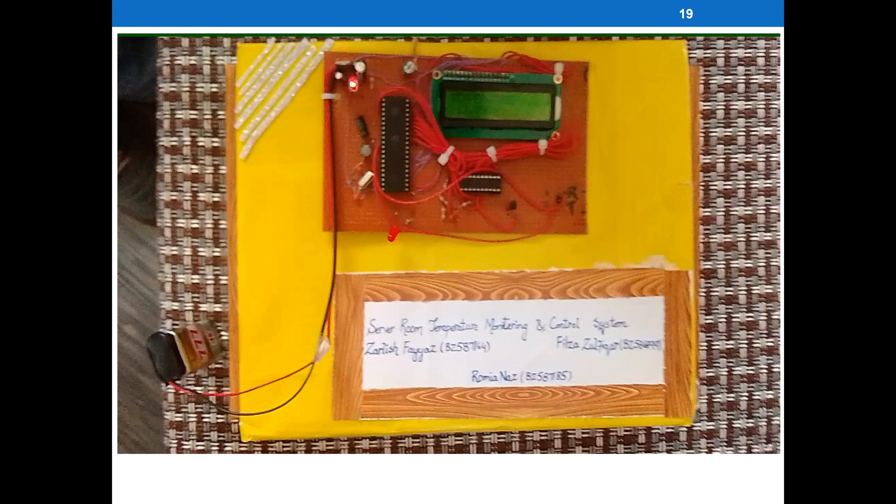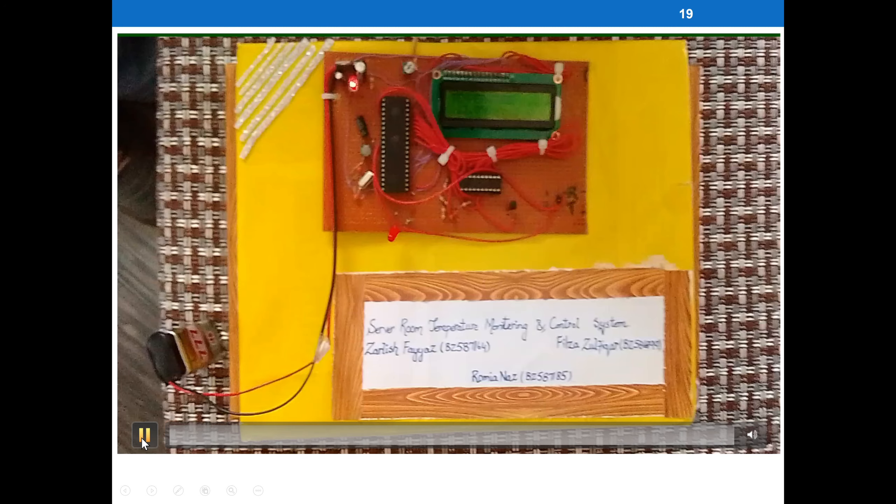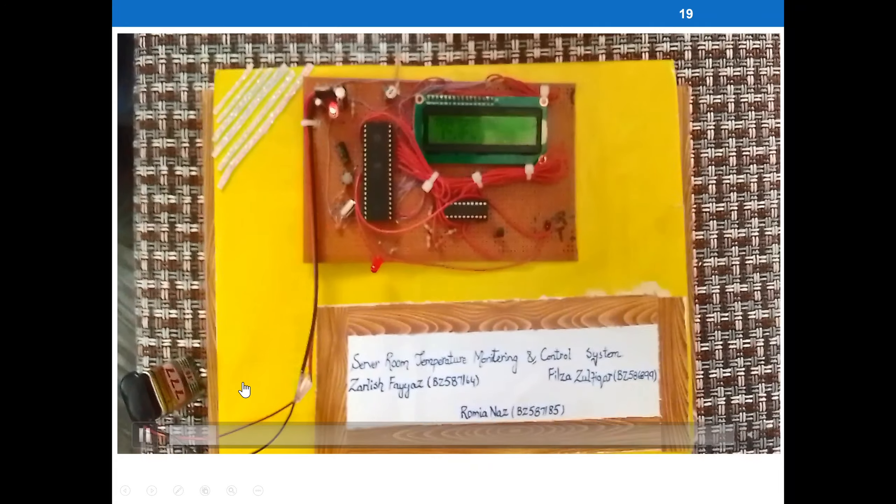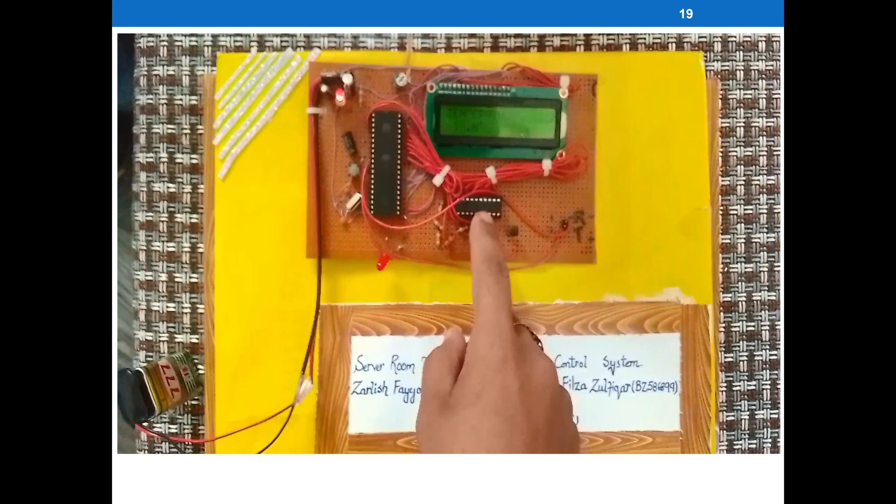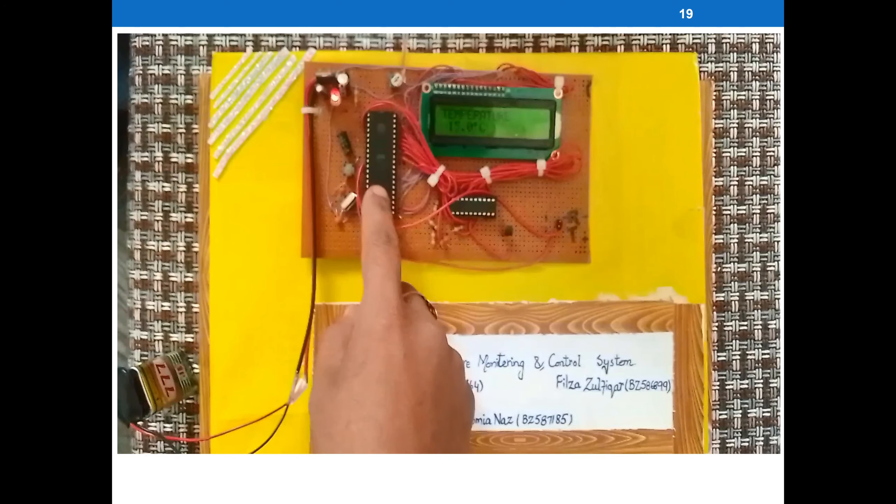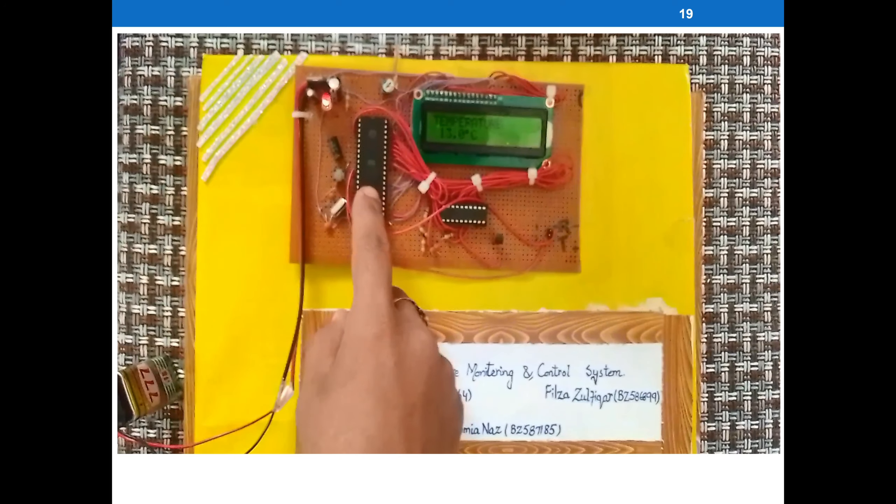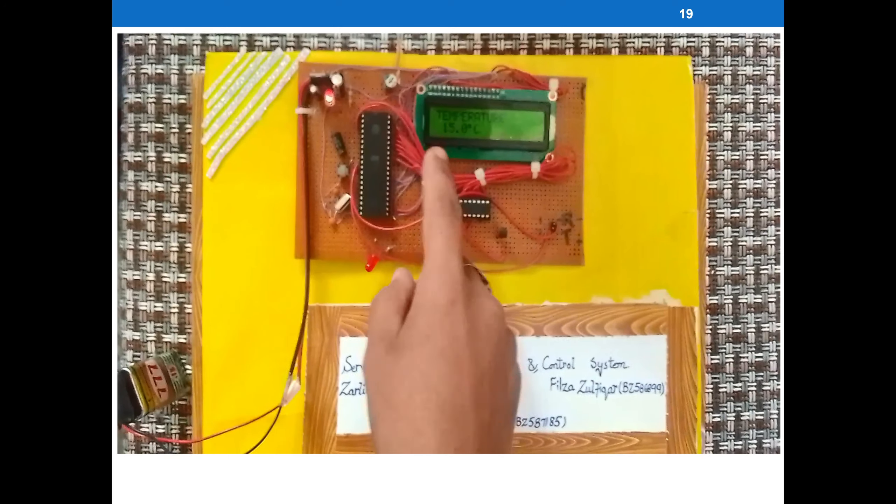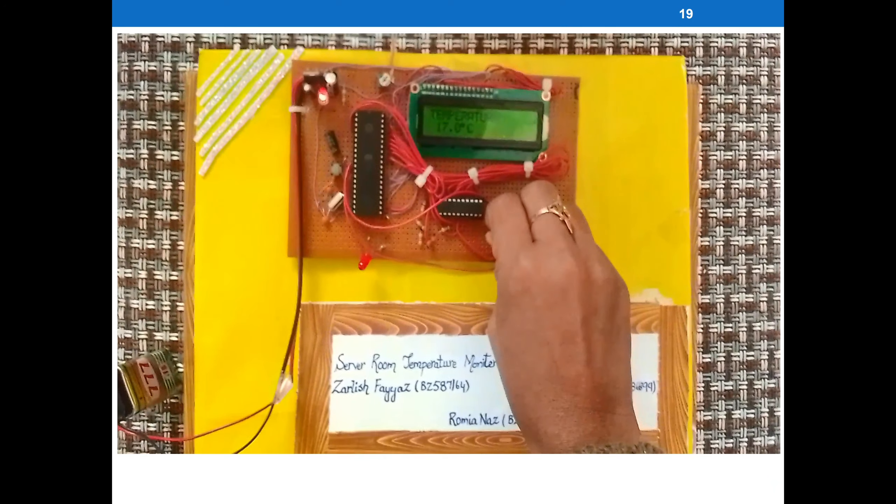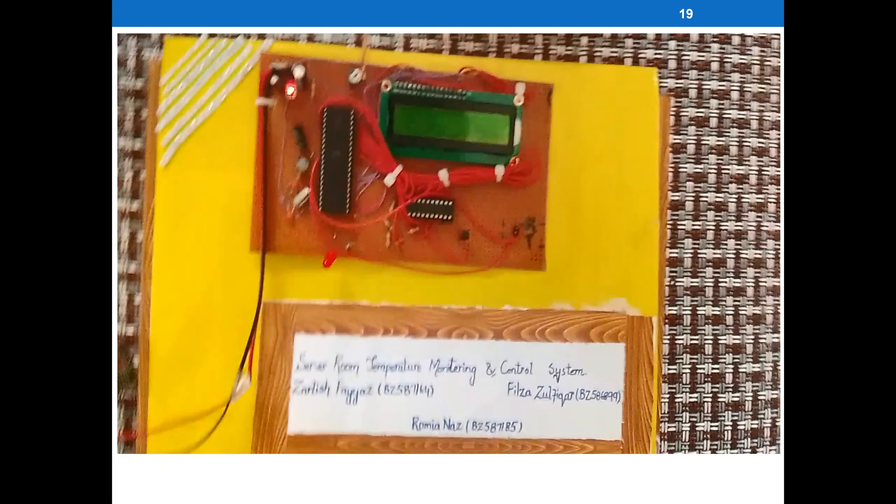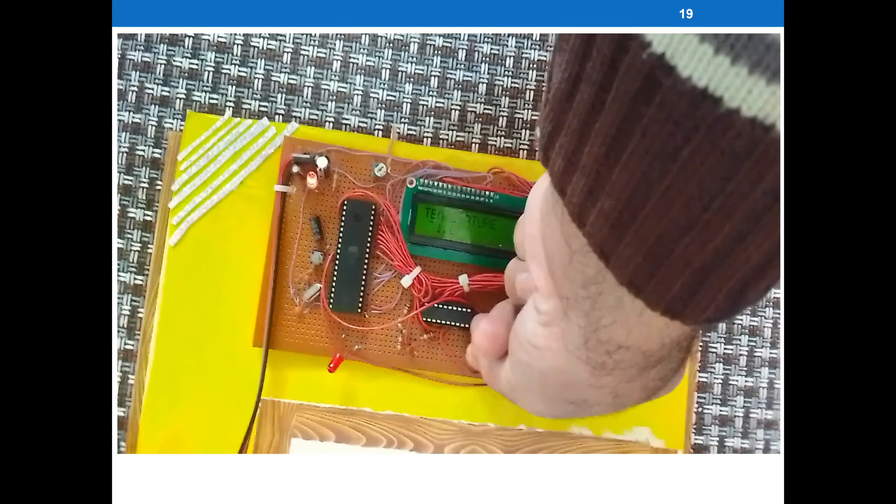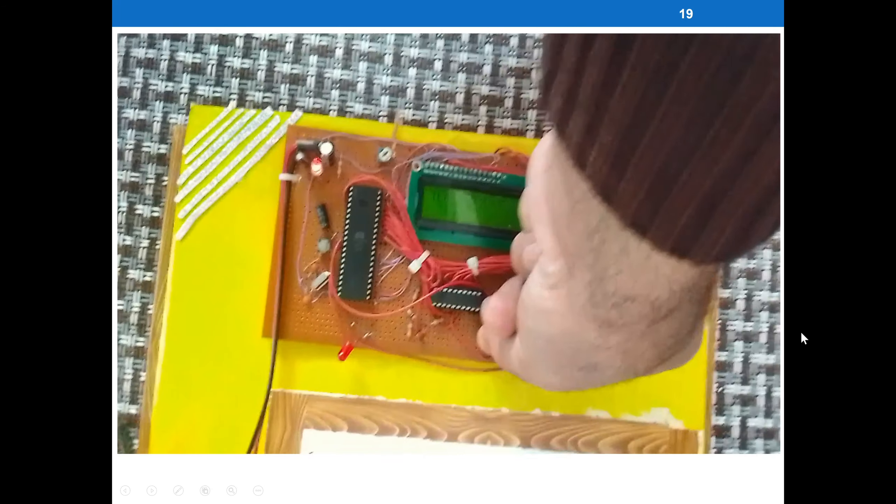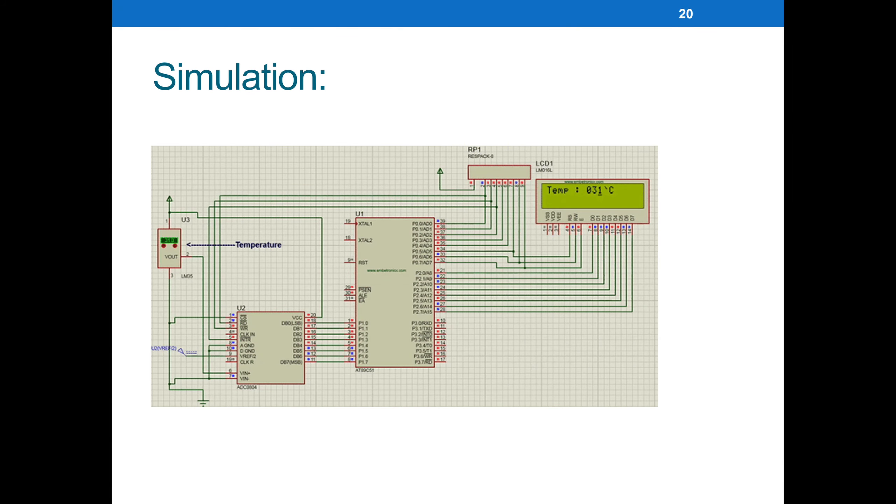This is the simulation of our temperature monitoring and control system. We have the temperature sensor connected with ADC. The microcontroller is powered by a 9V battery. The temperature is shown on the LCD. The room temperature initially shows 15 degrees, and when we increase it, the temperature shows 17 degrees. We can see that LM35 is connected to the ADC, and we have explained the hardware connections to the microcontroller.